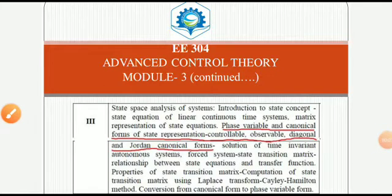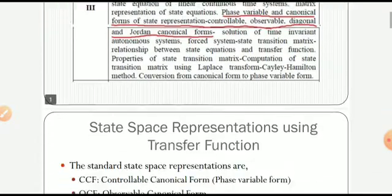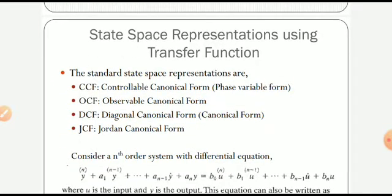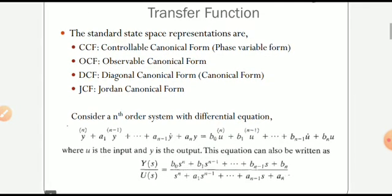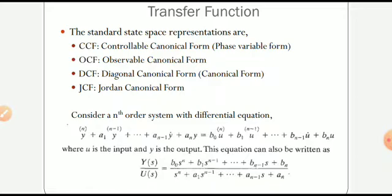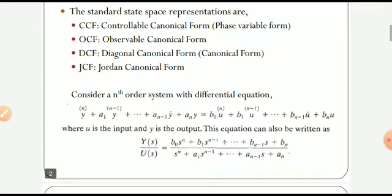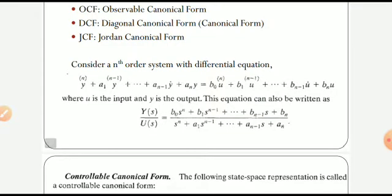Dear friends, this presentation gives you the concept of the standard state space representation. It's a topic from module 3. The standard state space representations using transfer functions are: CCF - controllable canonical form, also known as phase variable form; OCF - observable canonical form; DCF - diagonal canonical form, also known as canonical form; and a subcase of DCF, that is JCF - Jordan canonical form.